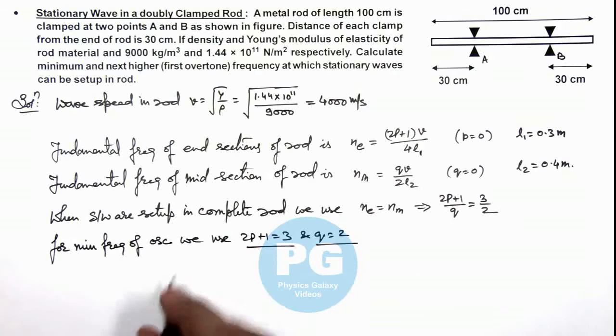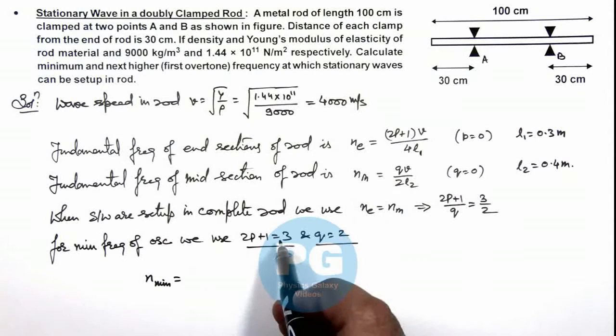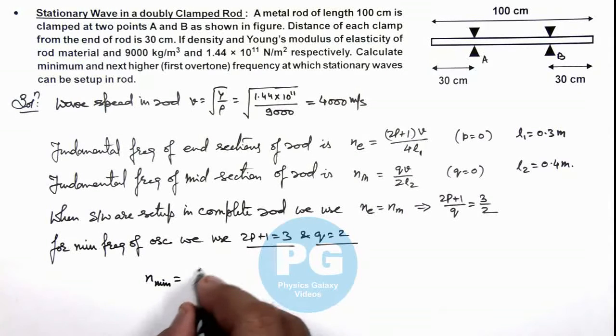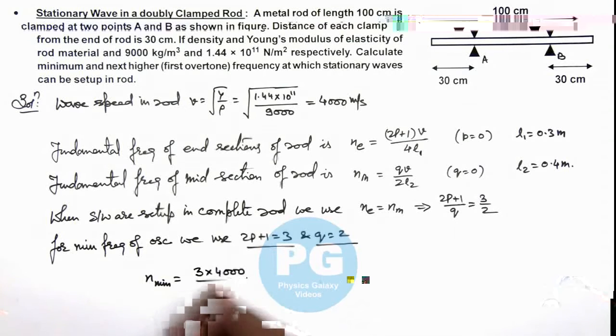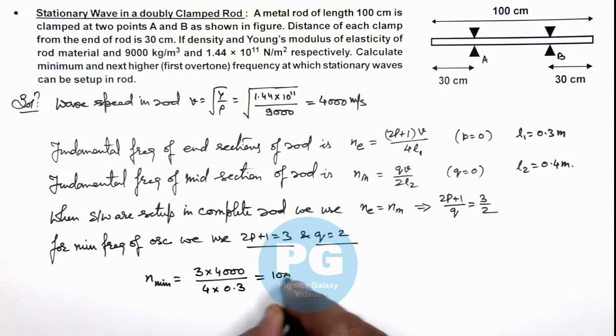If we use this value, then the minimum frequency can be given by directly—we can use either of these values. If 2p + 1 is 3, here it'll be used as 3 multiplied by 4000, divided by 4 multiplied by length 0.3. On simplifying, this is giving us 10,000 hertz, which is one answer for this problem.